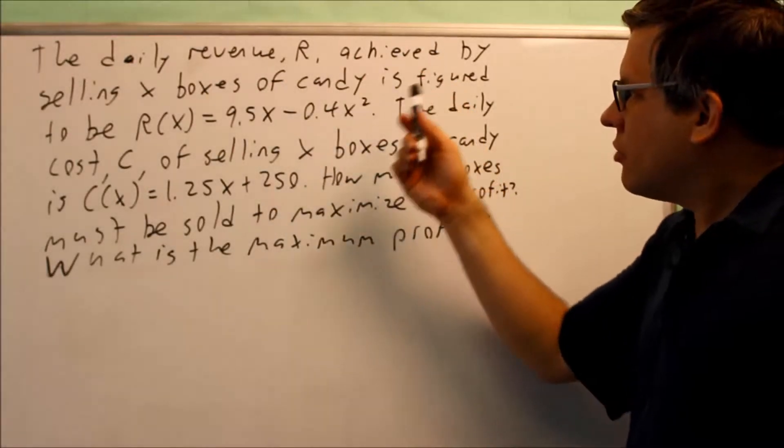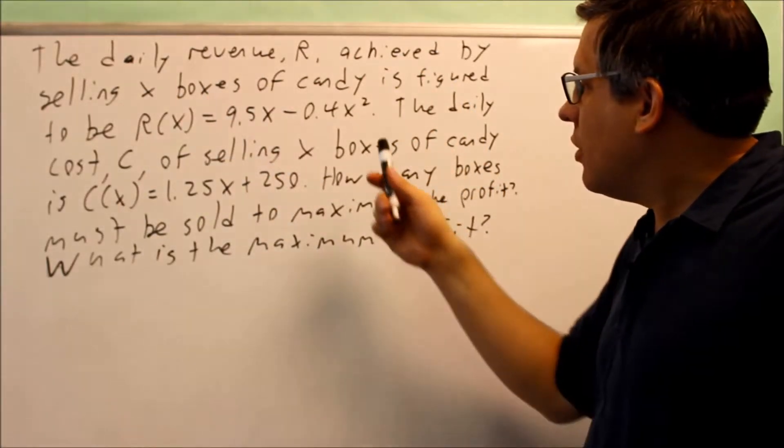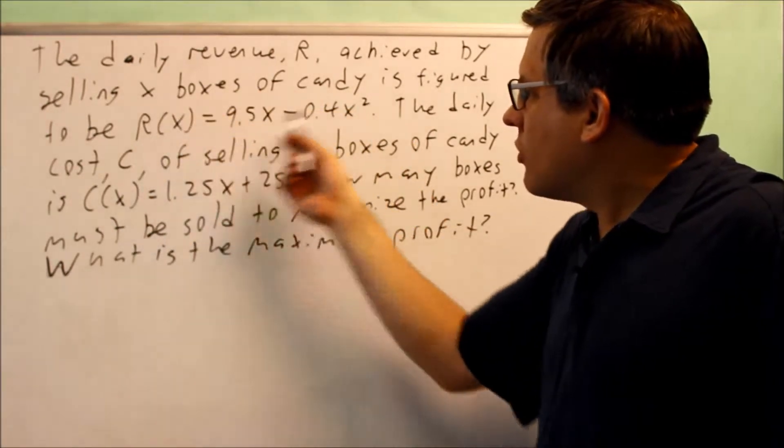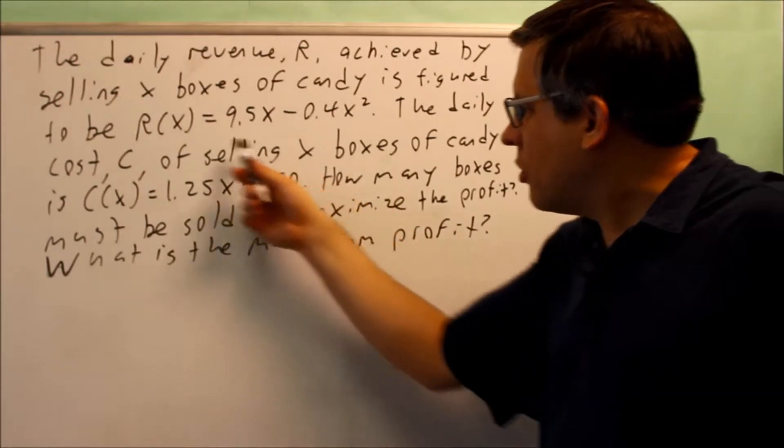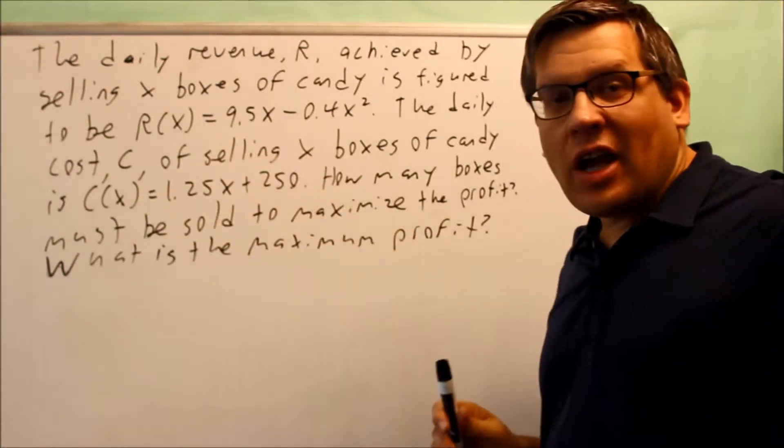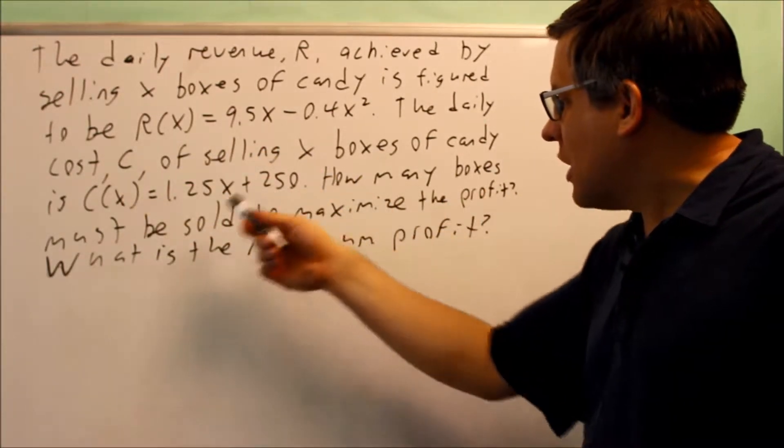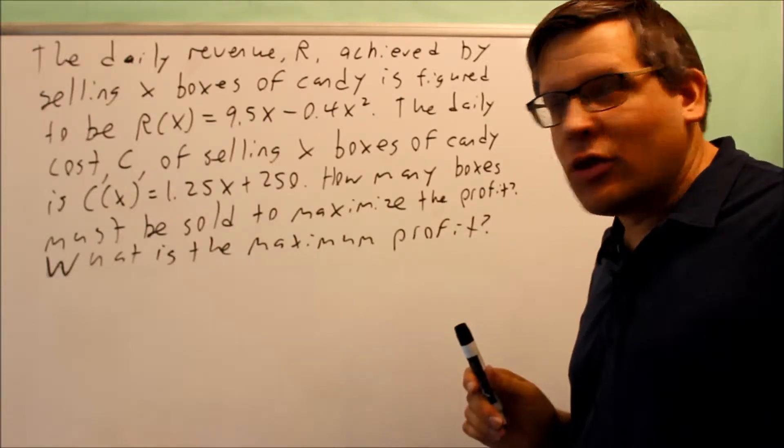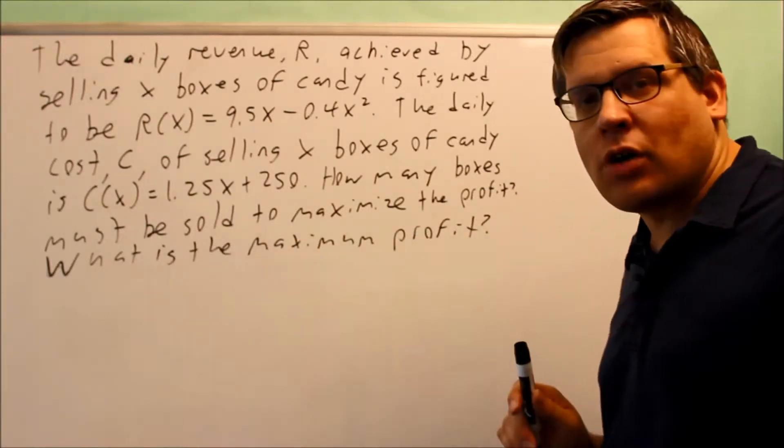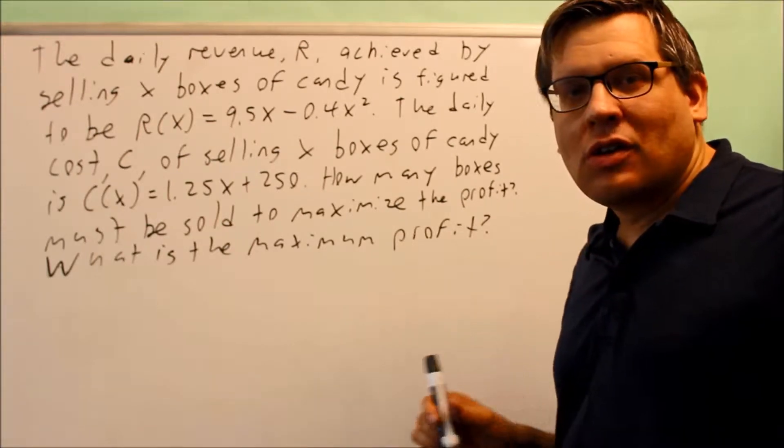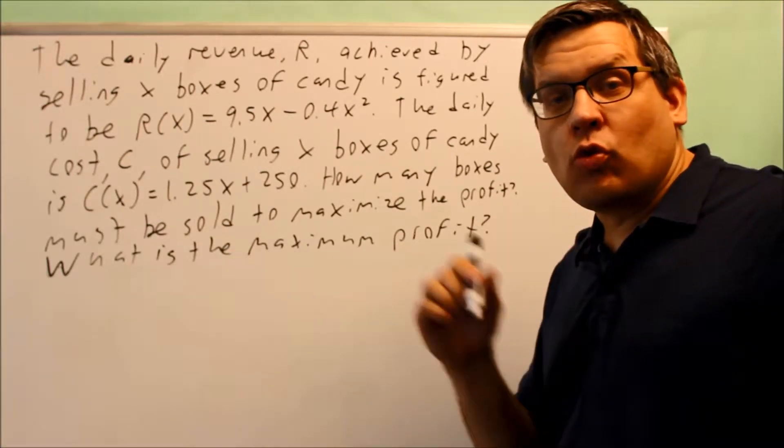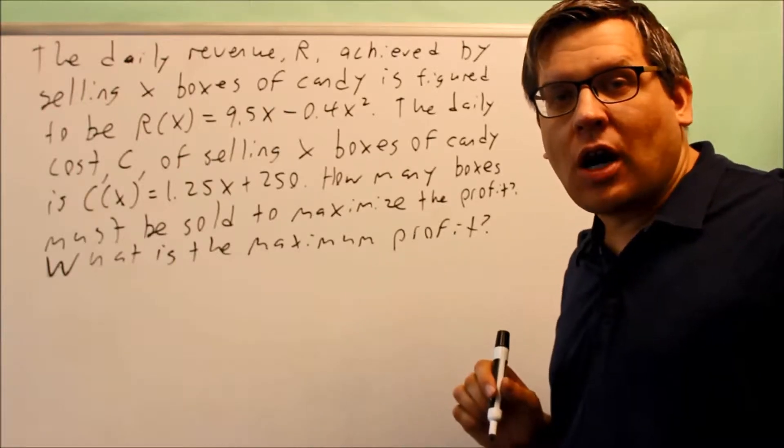We're given the daily revenue achieved by selling X boxes of candy, and they give us that revenue formula. They also give us a cost formula. It's asking us to find how many boxes have to be sold to maximize the profit and also what is the maximum profit. We have to know the definition of profit. Profit is equal to revenue minus the cost.